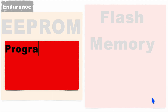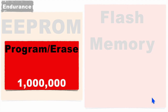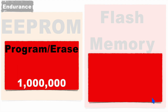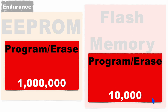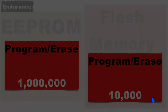The next difference is endurance. The EEPROM program or erase cycle count is almost 1 million, meaning you can program or erase your EEPROM device about 1 million times. On the other side, flash memories can be programmed or erased only about 10,000 to 100,000 times.